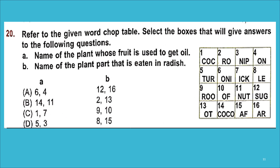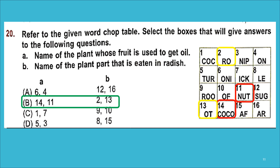Question 20: Refer to the given word grid. Name of the plant whose fruit is used to get oil — coconut comes to mind. In the grid, boxes 14 and 11 give us 'coconut', so A is 14 and 11. Name of the plant part eaten in radish — radish is a root vegetable; in the grid 'root' is at boxes 2 and 13. So A is 14, 11 and B is 2, 13 — the right answer is option B.